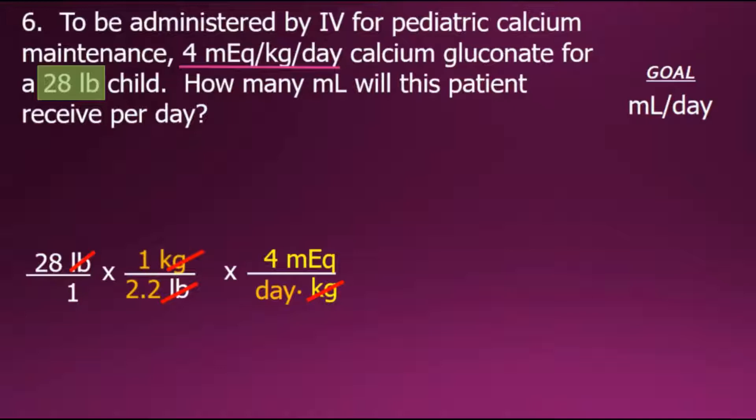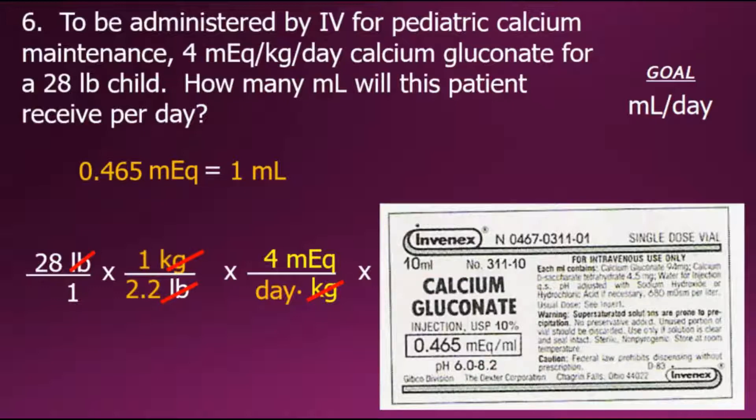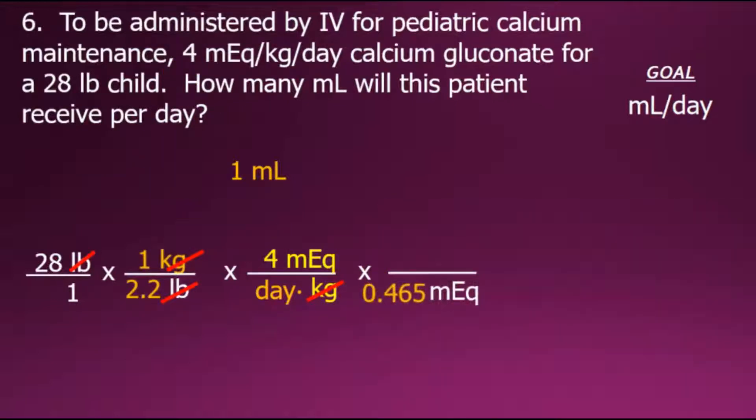We have milliequivalents per day. Consulting the drug on hand, we see that there are 0.465 milliequivalents per milliliter. Using that relationship will allow us to set up an additional conversion fraction with the milliequivalent value in the denominator and the milliliter in the numerator.